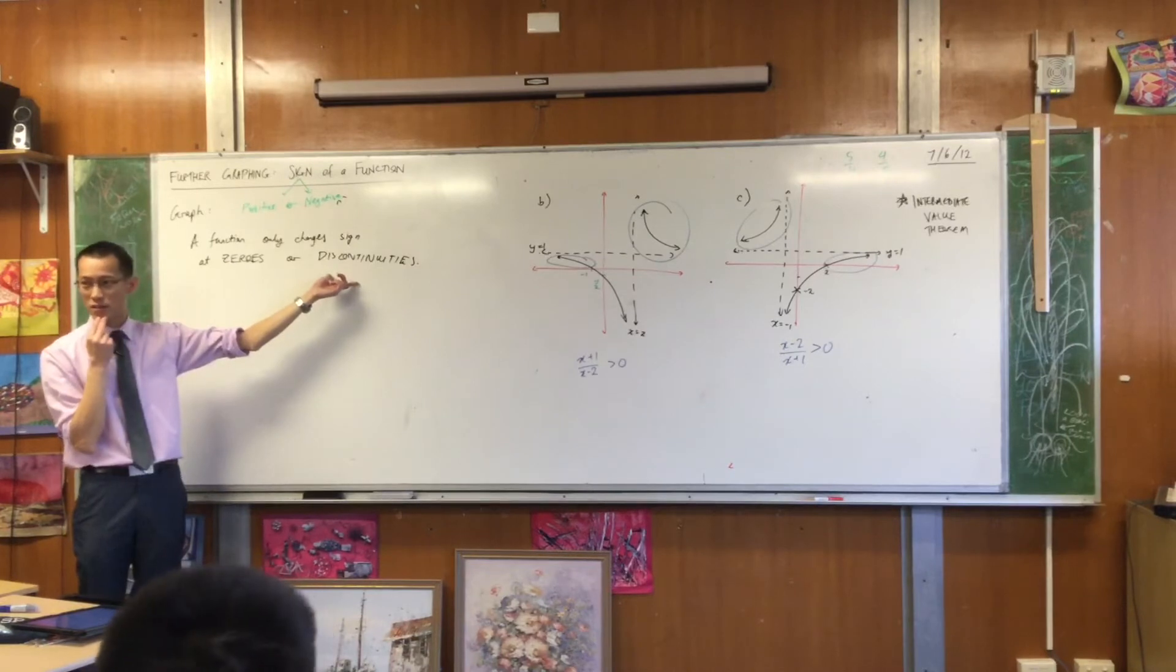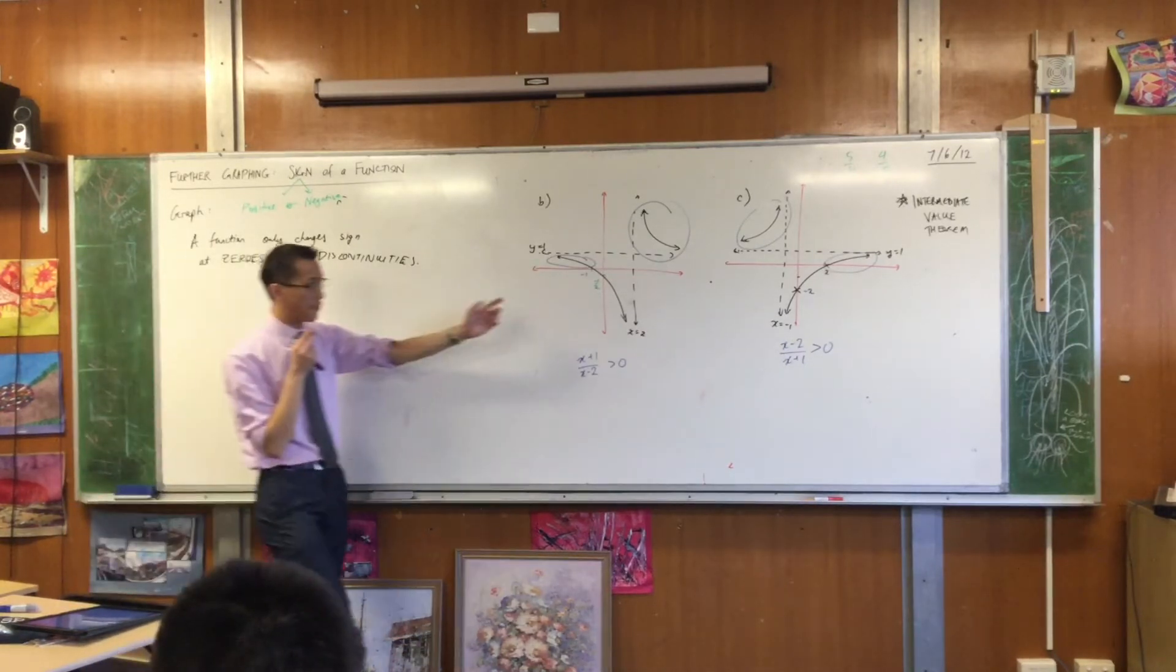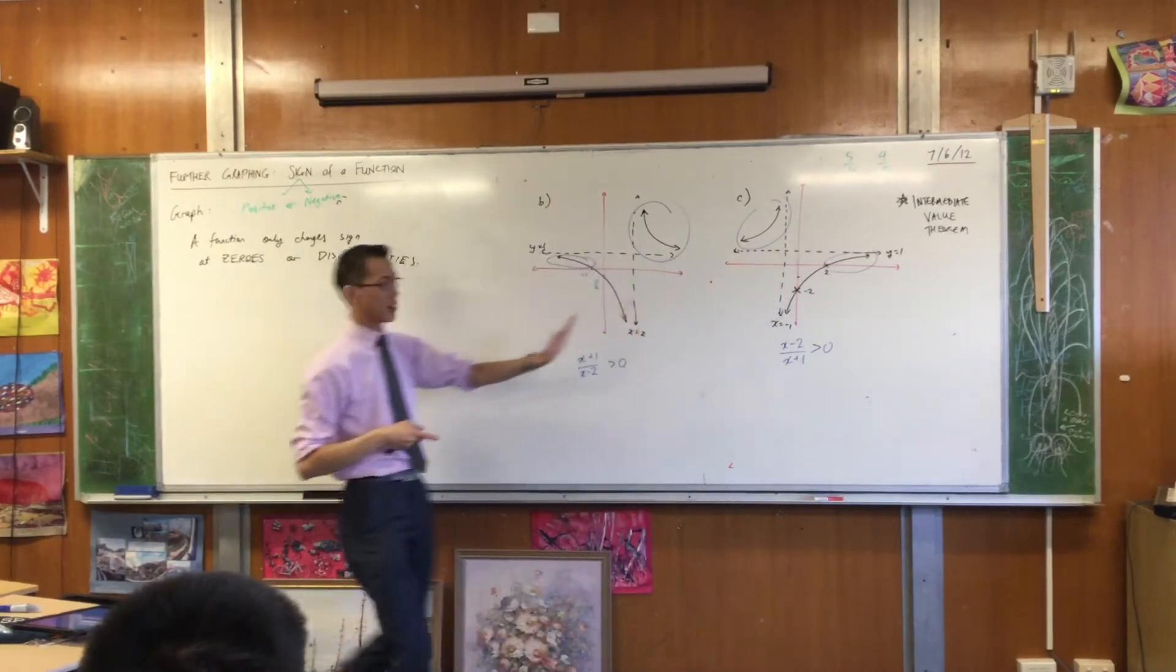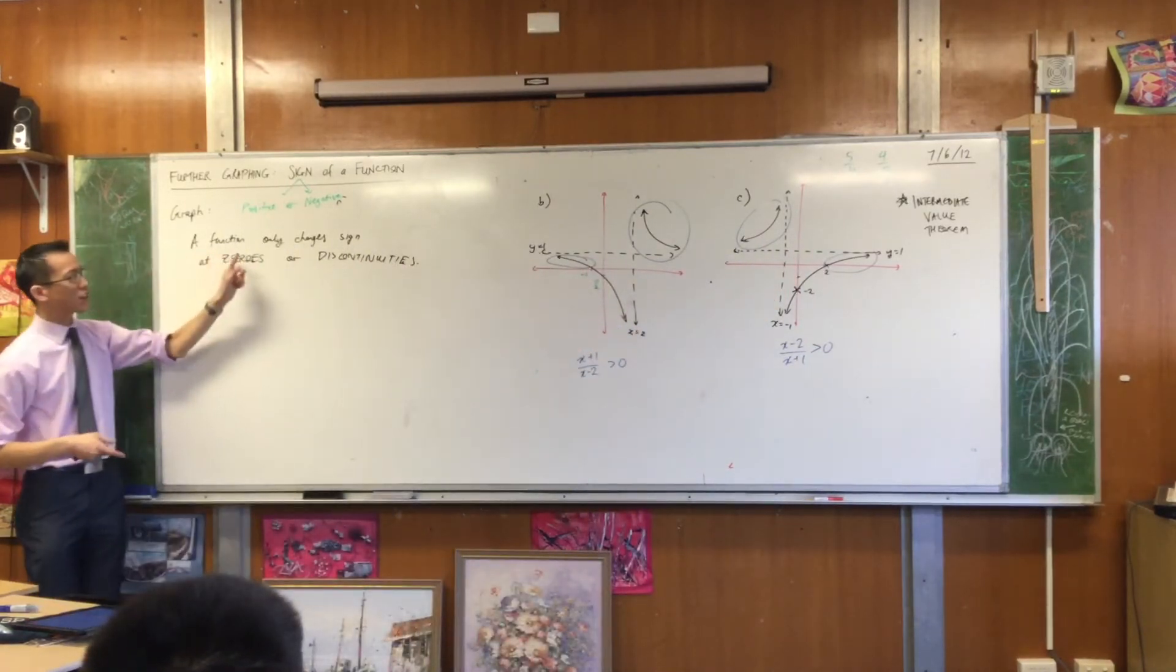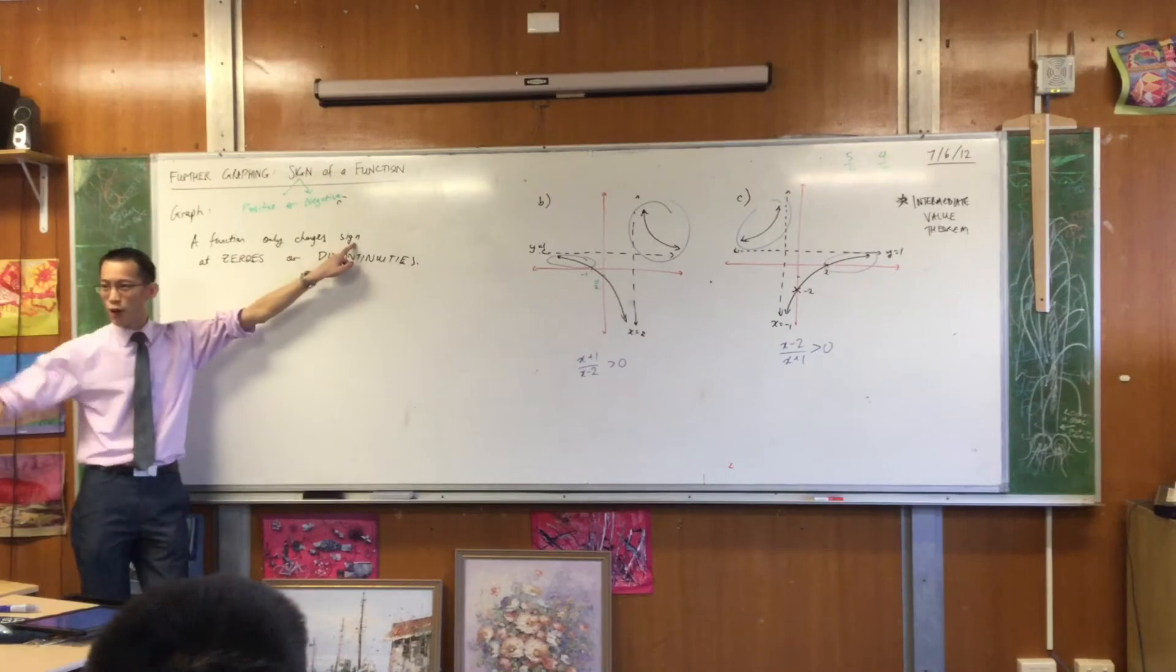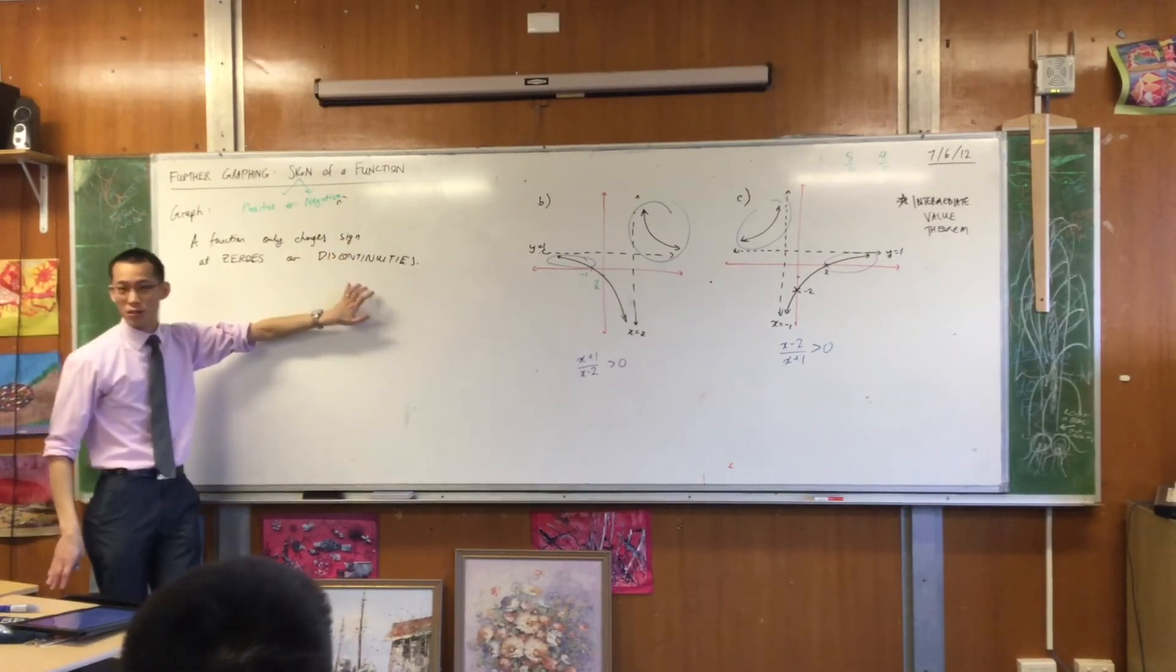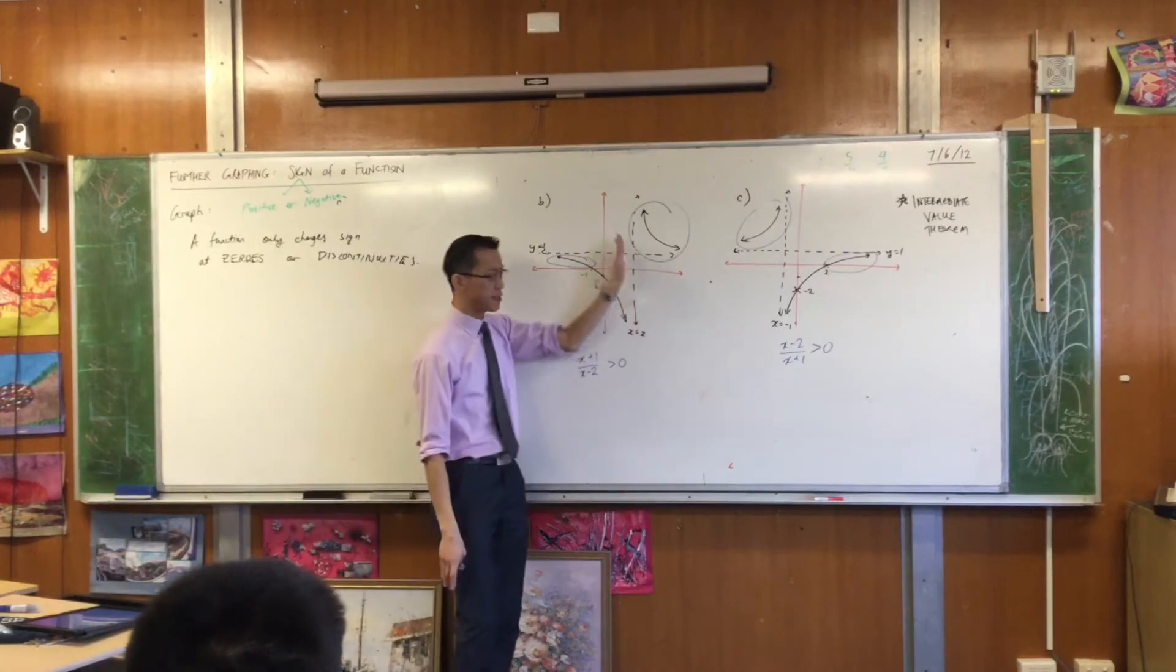Where are the discontinuities for each of these functions? It's these vertical asymptotes, right? Vertical asymptotes are about discontinuities. Can you see that these functions, they change sign? They go from positive to negative, on either side of discontinuity. Do you notice that? Look here. Here's the discontinuity.